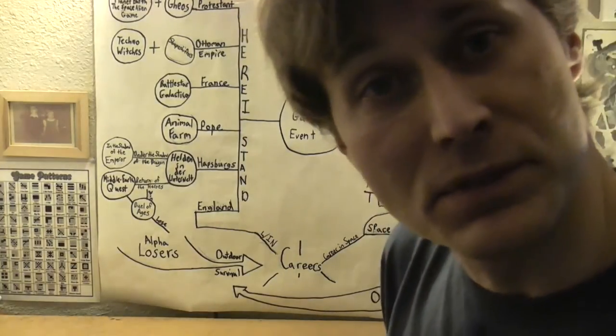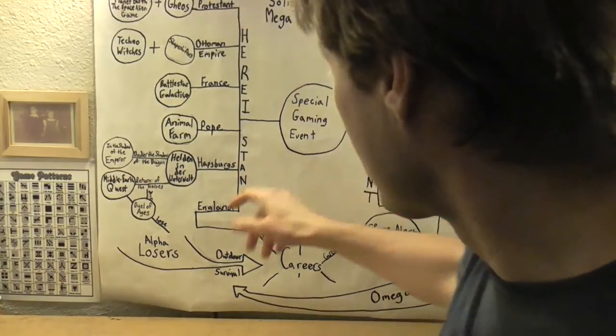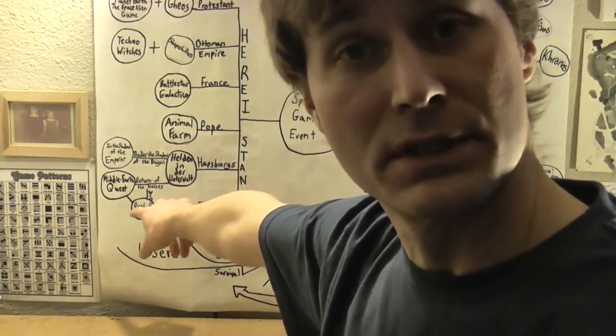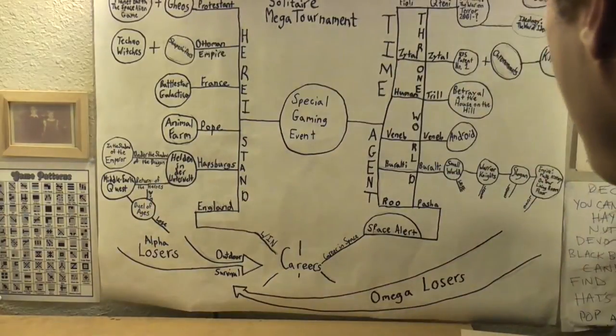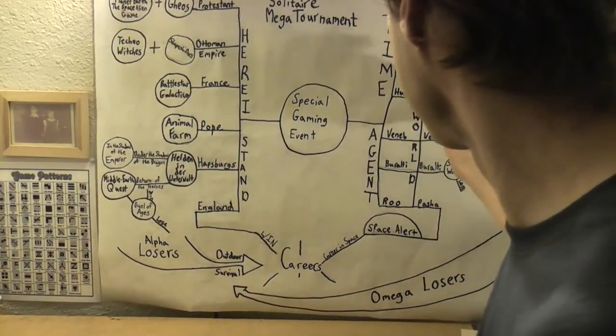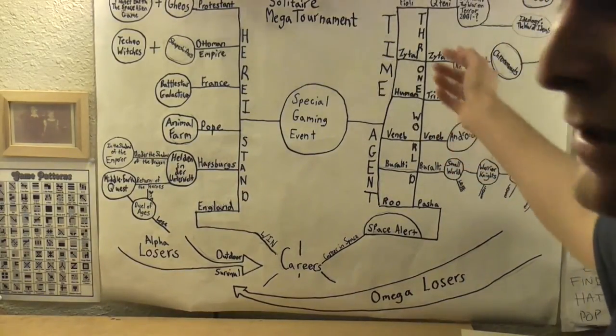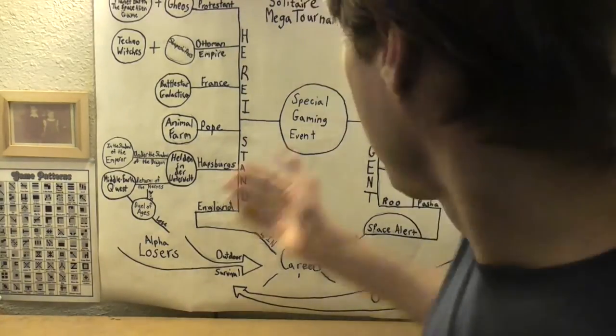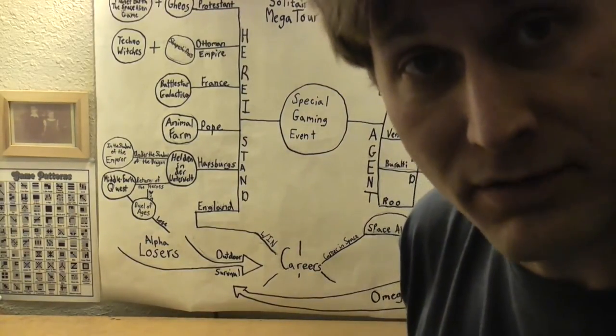Then occasionally I have to add in other games to decide tiebreakers. So Duel of Ages, for example, wasn't originally in the tournament, but I needed it for a tiebreaker. I haven't done this yet, but after Betrayal at the House on the Hill, there's a tiebreaker I need, and so Fearsome Floors is going to come into play for that.